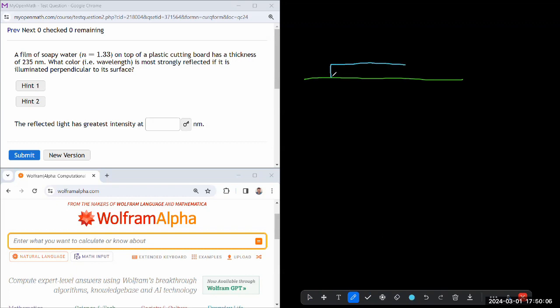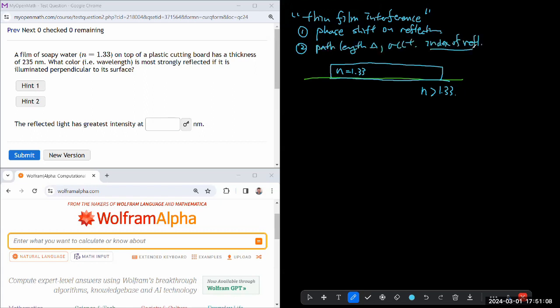So I have some kind of surface, plastic cutting board. I don't think it matters what it is. Do I need to know its index of refraction? Oh, you know, I might have to. So I have soapy water, which has index of refraction of 1.33. I could just treat this material as some n greater than 1.33. Yeah, I think I need to. Because this is, so the analysis I need to do is what's called a thin film interference.